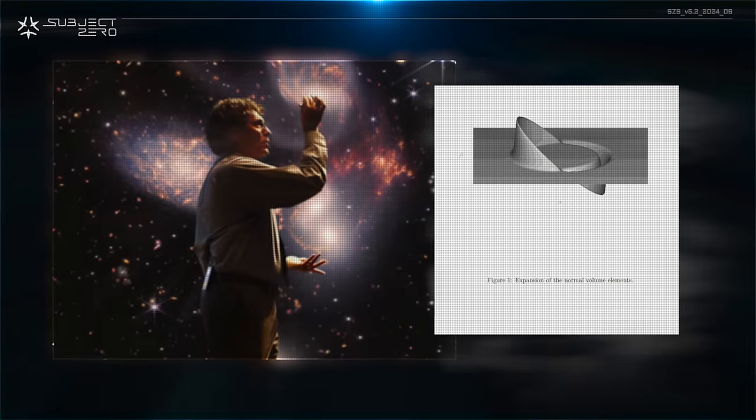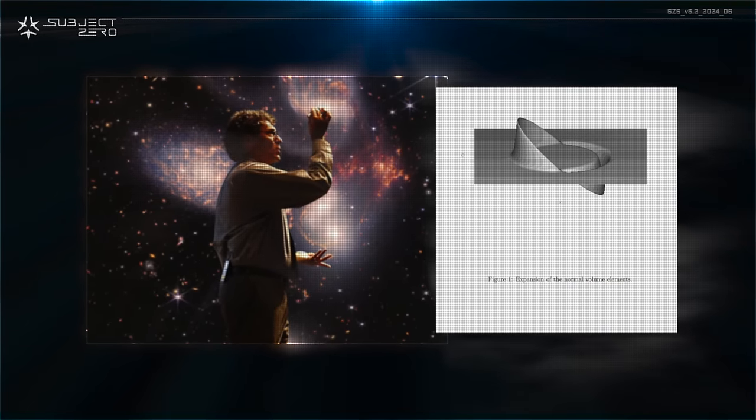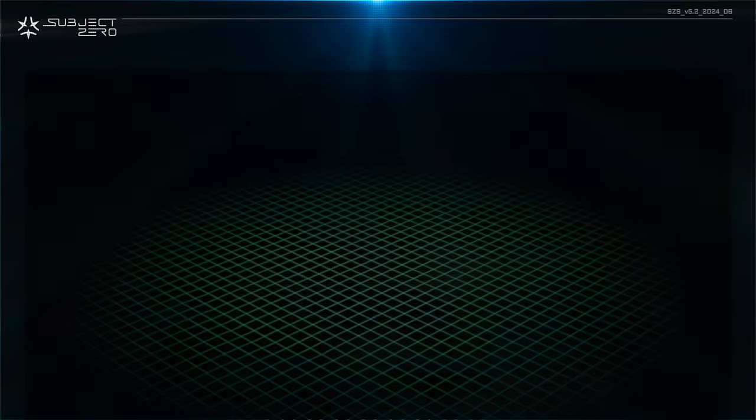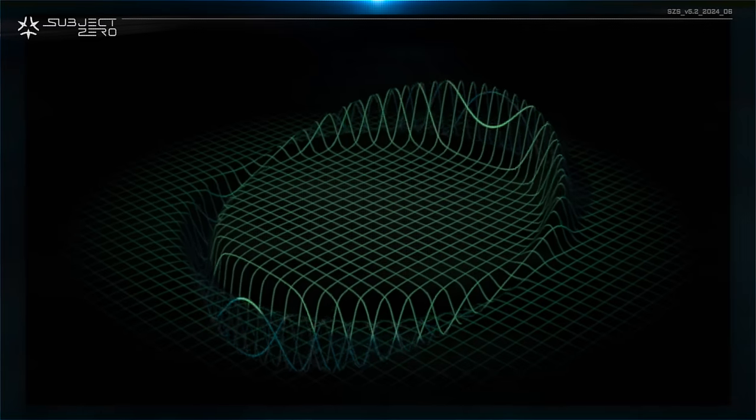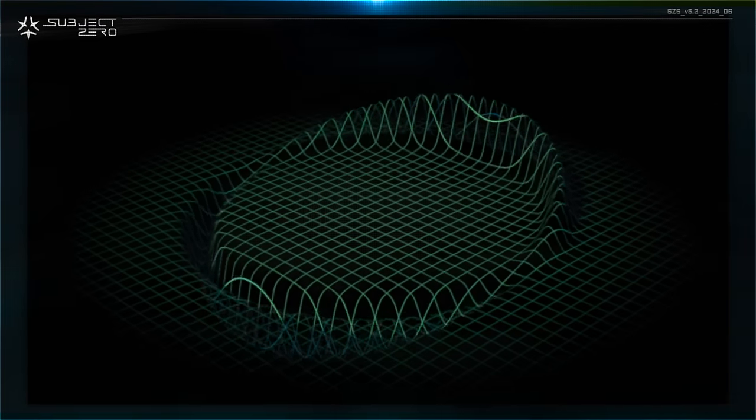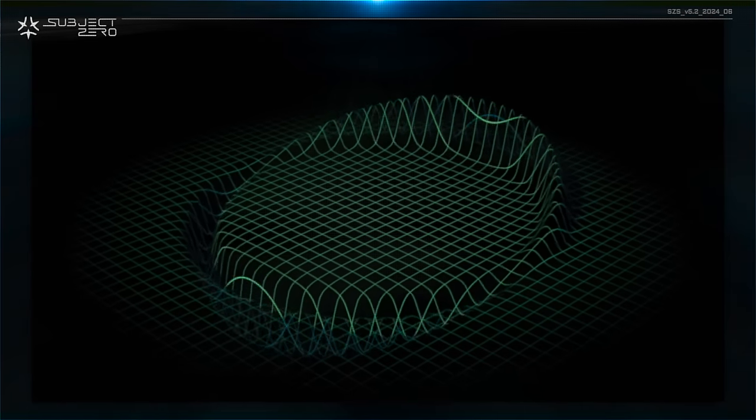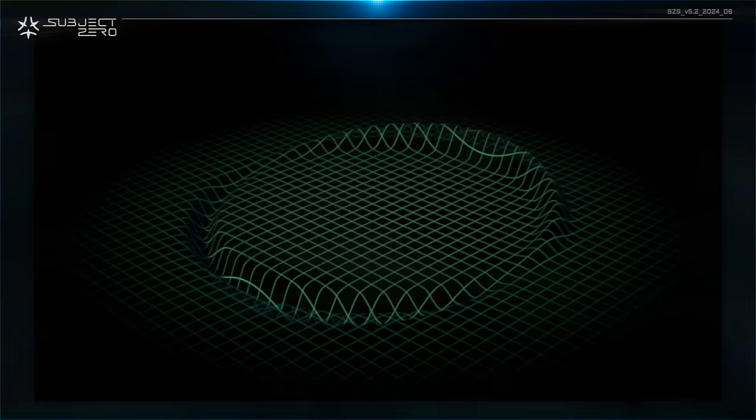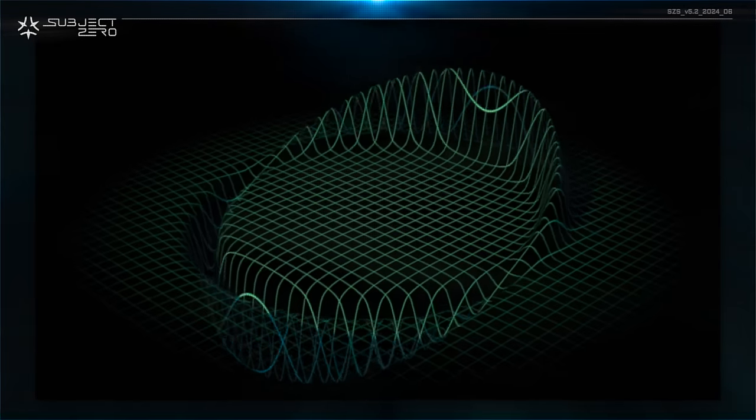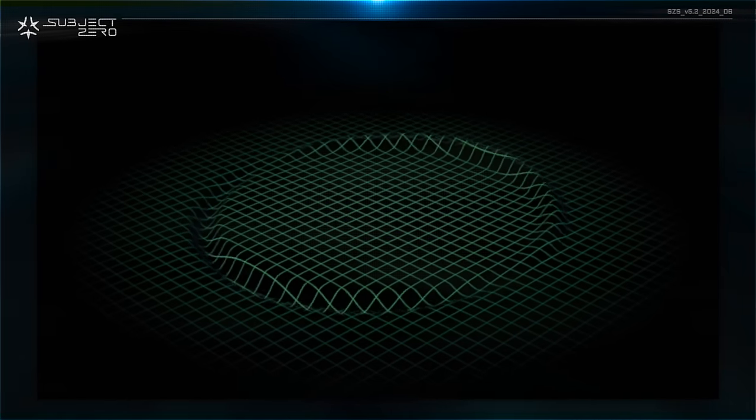The concept of warping spacetime is central to the idea of the warp drive. Alcubierre proposes the creation of a warp bubble around a spacecraft. This bubble would contract spacetime in front of it and expand it behind it, effectively creating a region of warped spacetime within which the spacecraft could travel faster than the speed of light relative to the surrounding space.